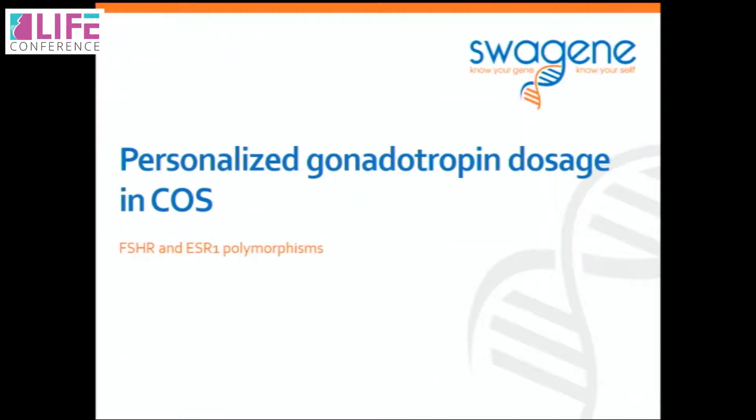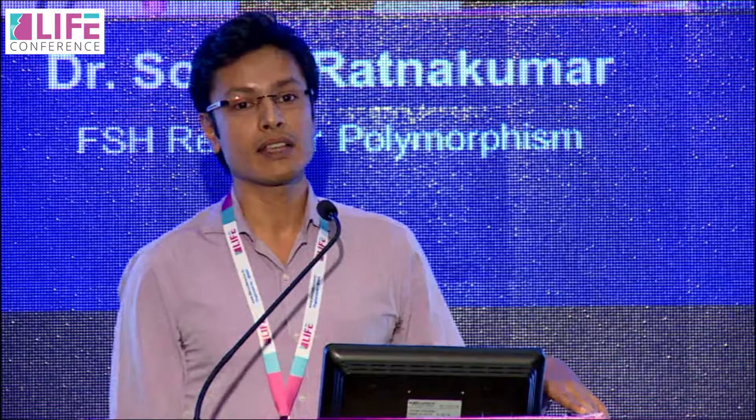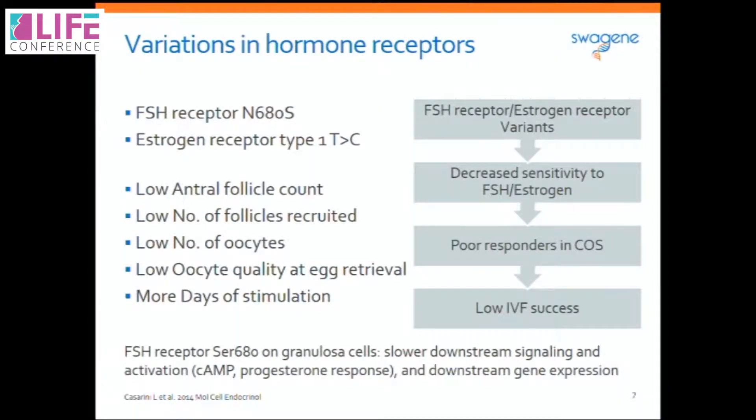We will start with female infertility and how we use genetic polymorphisms in women, mainly the FSH receptor polymorphism and the polymorphism in estrogen receptor type 1. The FSH receptor is expressed in folliculogenesis right from primary follicles and preantral follicles and is responsible for AMH secretion by these follicles. When variations in FSH receptor and estrogen receptor type 1 are present, it leads to poorer response in women during controlled ovarian stimulation in IVF protocols — resulting in low antral follicle count, low number of follicles recruited, low number and quality of oocytes retrieved, and increased days of stimulation.